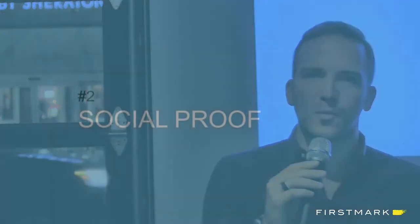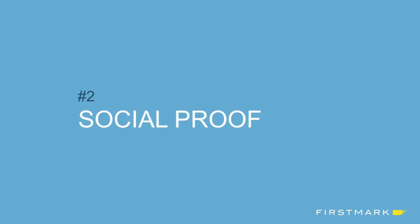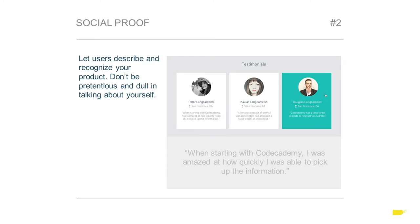Principle two is social proof — a very common principle now, and we wanted to embrace it as much as we could. Social proof is important because sometimes you don't want to be pretentious about talking about yourself. You should let users do the talking in terms of how great your product is and how well they like using it.